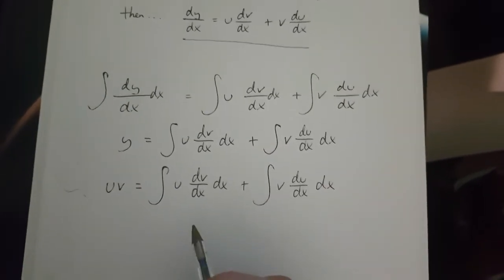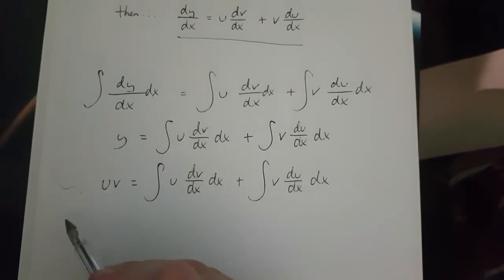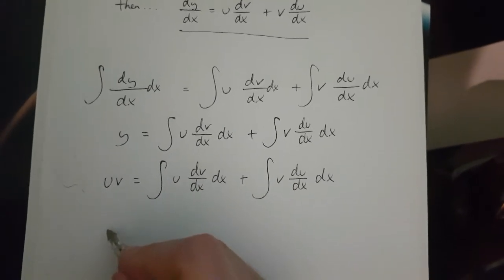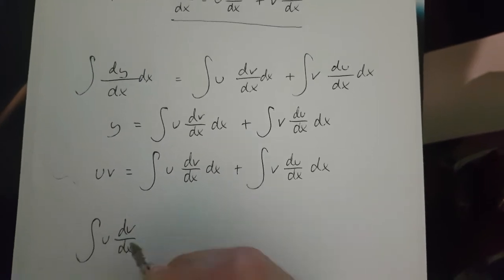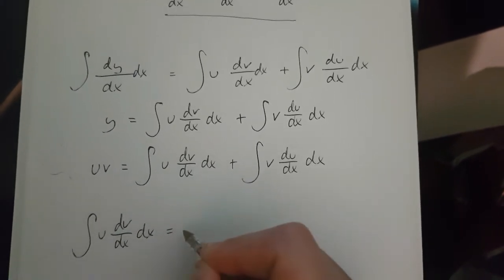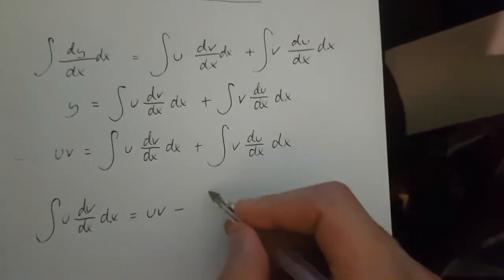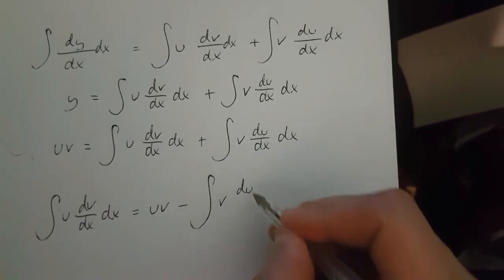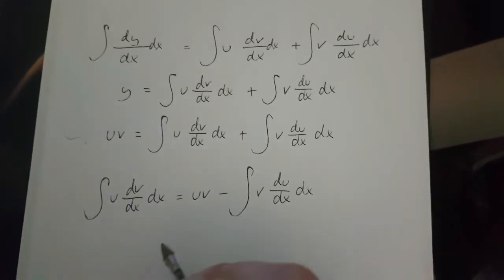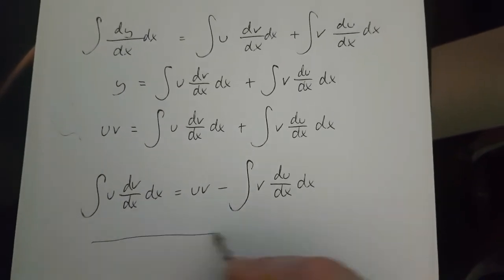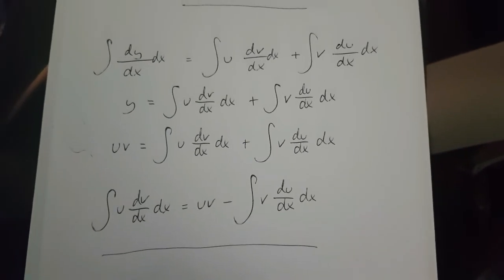And if we send this to the other side of the equation, we get integrate u dv over dx equals uv minus integrate v du over dx. And this is the integration by parts formula.